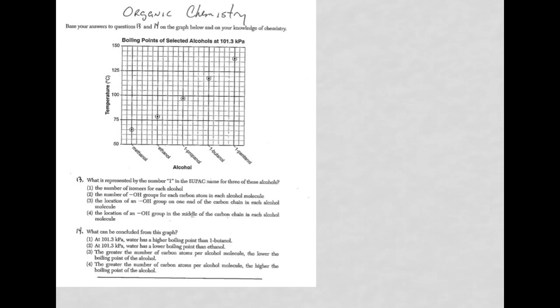Last two questions. We're looking at a graph. It says boiling point of selected alcohols at 101.3 kilopascals, which is standard pressure. I have temperature, and I have my alcohol. Notice what's happening is meth, eth, prop, but, pent. So, we're going up by one carbon each. Let's take a look at the questions now. For question thirteen, what is represented by the number one in the IUPAC name for the three of these alcohols? The number in front gives me the position, in this case, of the OH group for alcohols that is on the molecule. If I take a look here at which choice would be the best, the choice that would be the best here is choice three. Now, the location of the OH group, there's also choice four. The difference is this says middle of the carbon. But, that's not going to be correct here, because the number one indicates it's always on the first carbon, which is going to be on an end of the carbon chain. So, the best choice is choice three.